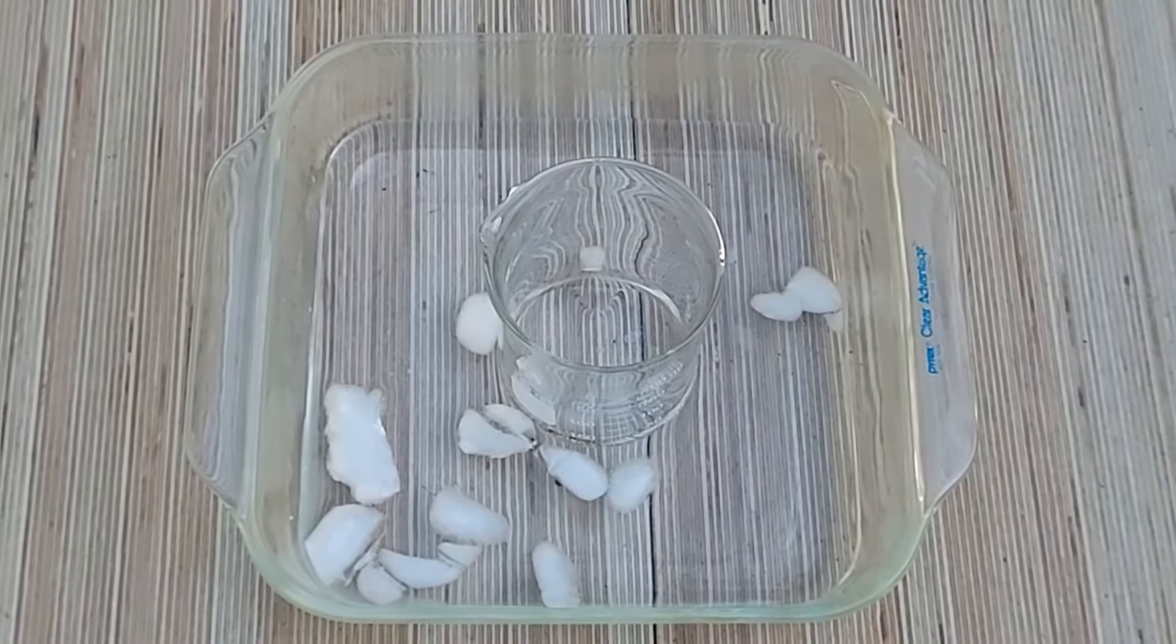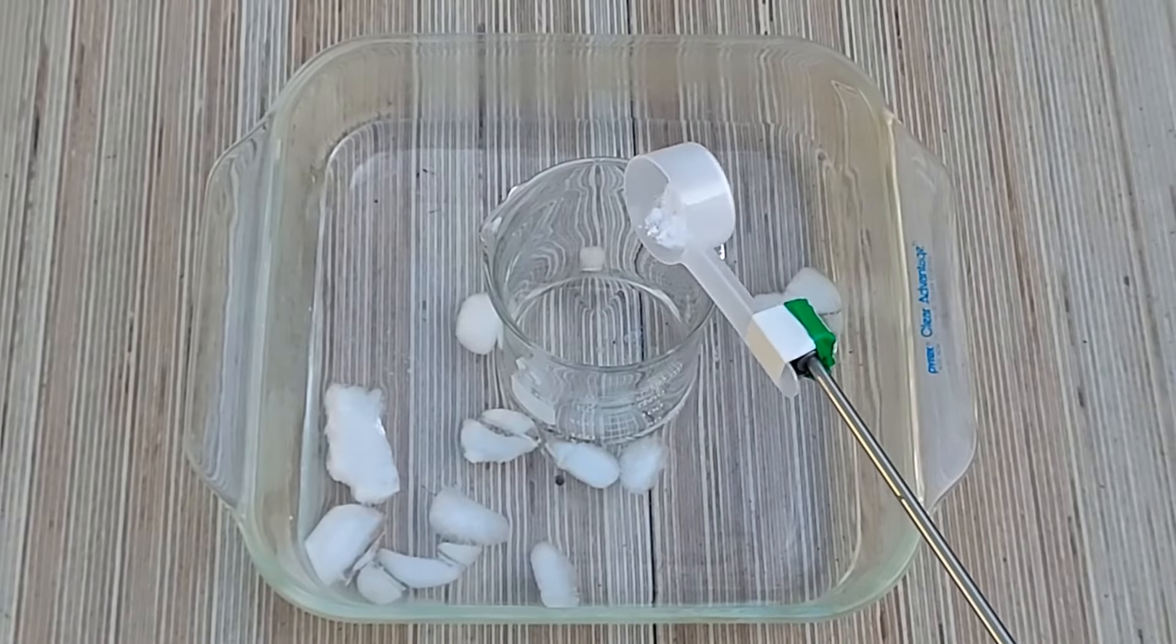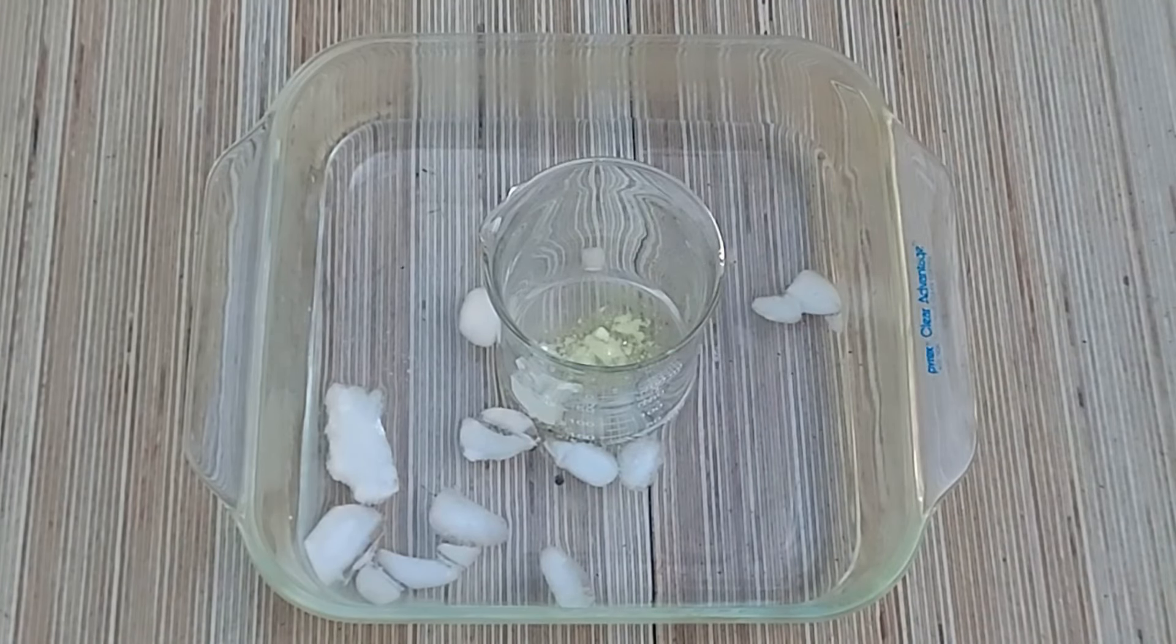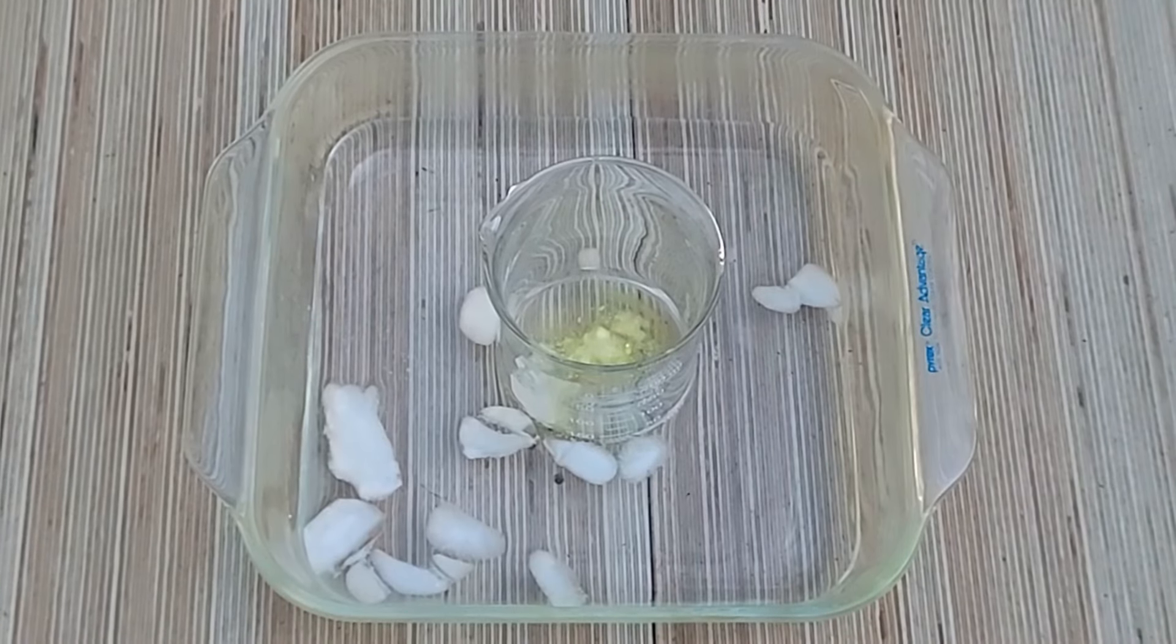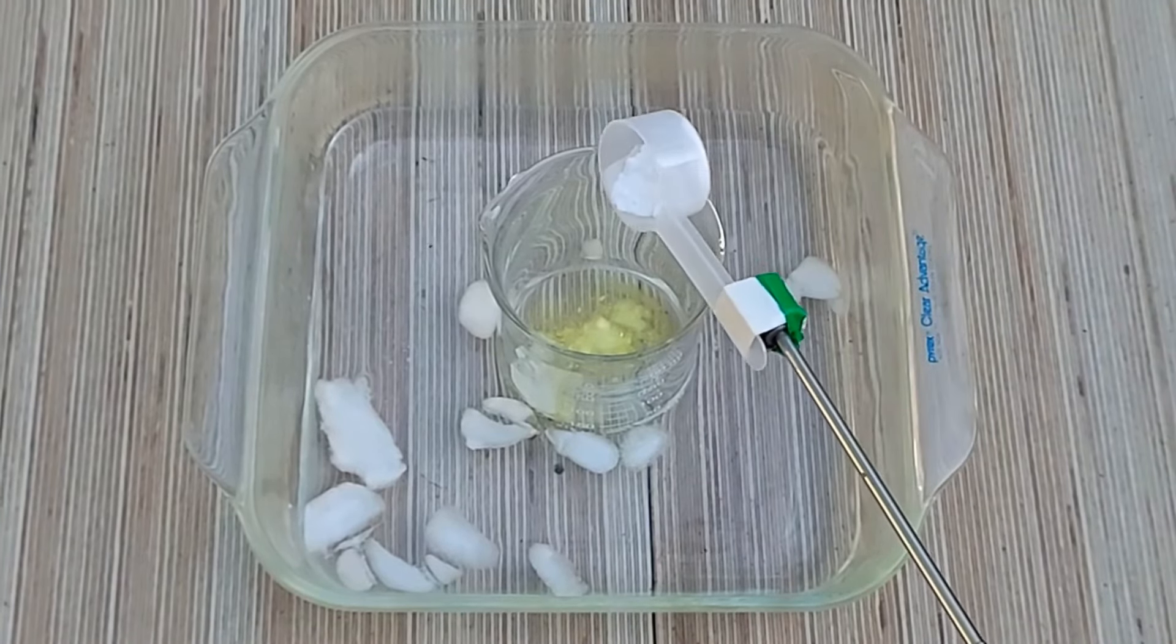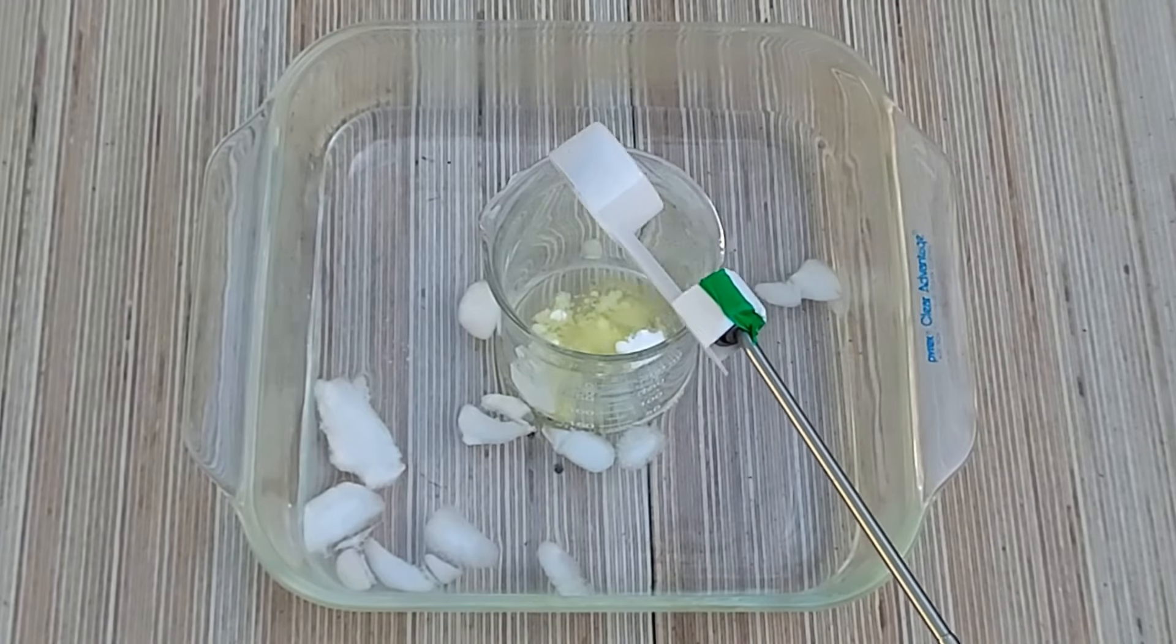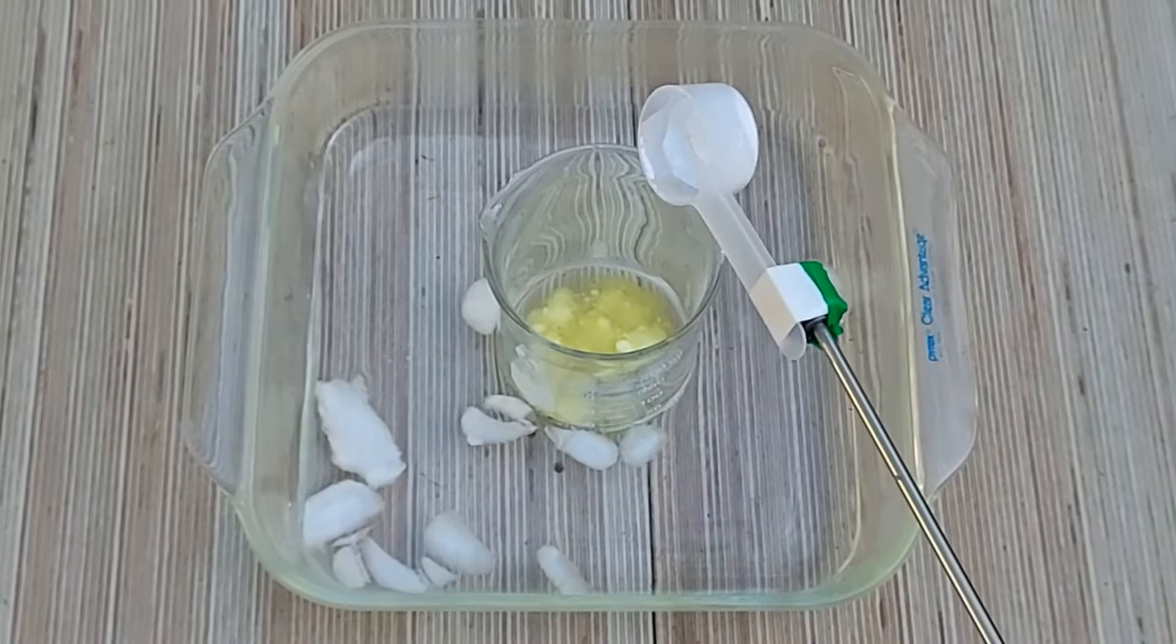I'll now be adding the first quantity of the potassium chlorate. The yellowish stuff you see near the bottom there is the chlorine dioxide, the serious gas and potentially very explosive. I'm now adding the second quantity here, and the last bit of potassium chlorate.